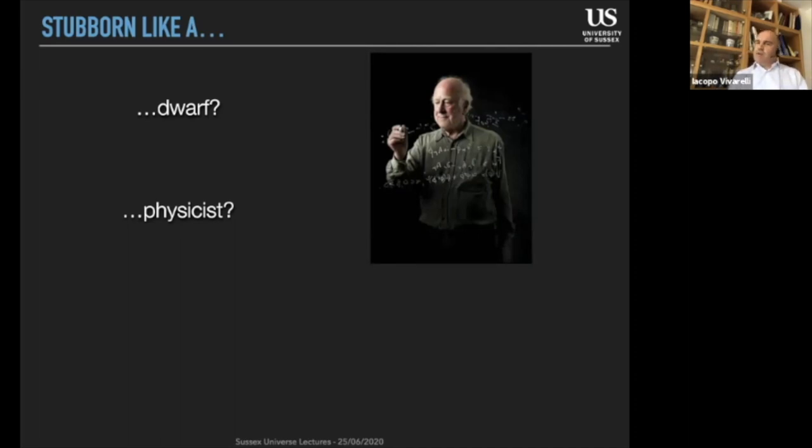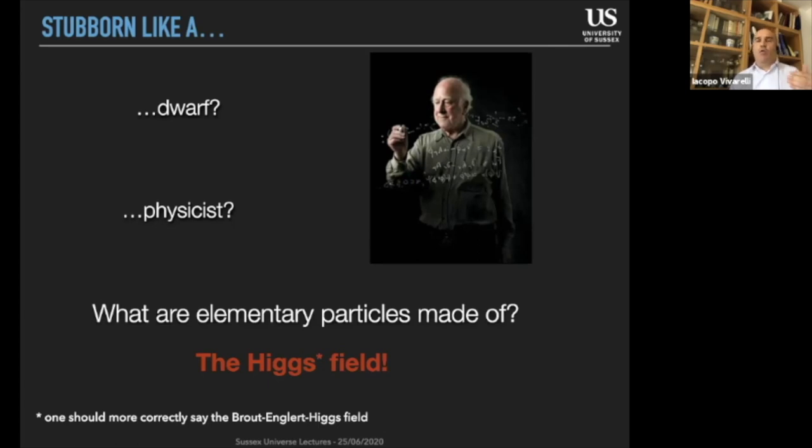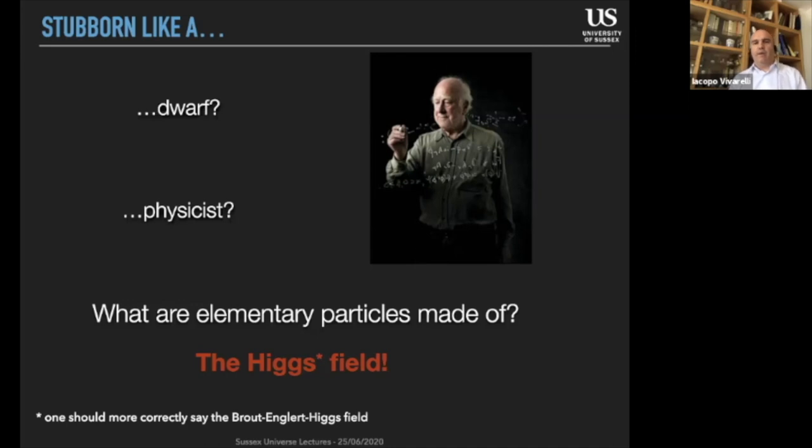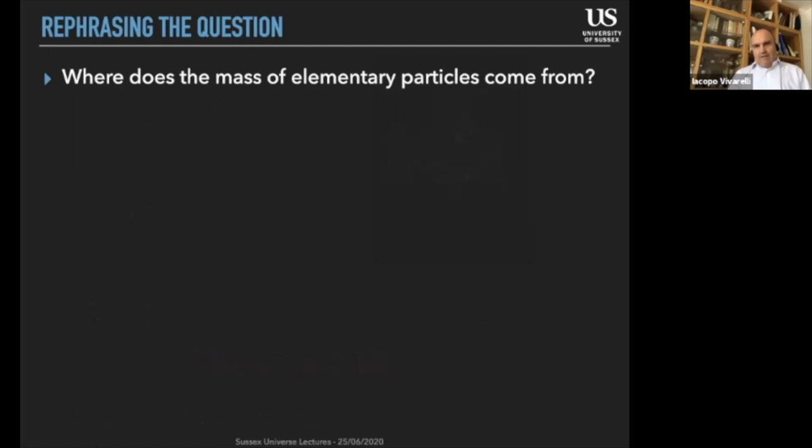So we may ask ourselves, what are these elementary particles made of? And now we are going very close to a philosophical level of questions. But there's still one level further that we can go, because I think it's fair to say, what we can say today, intending this answer in the way I'm going to explain, that these elementary particles are in fact made of what we call the Higgs field, or more precisely, we should say the Brout-Englert-Higgs field, in the name of Robert Brout, François Englert and Peter Higgs, which are the people that delivered this model to the scientific community.